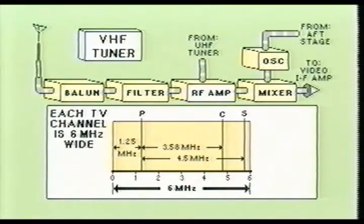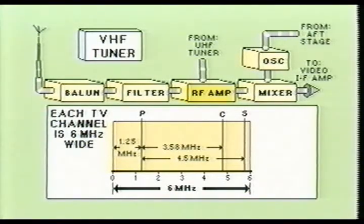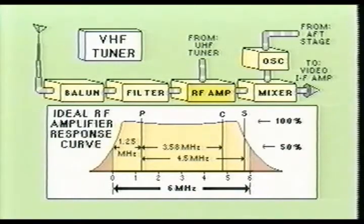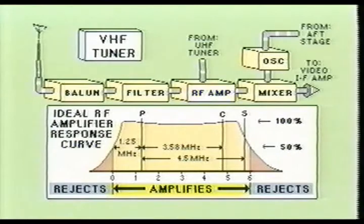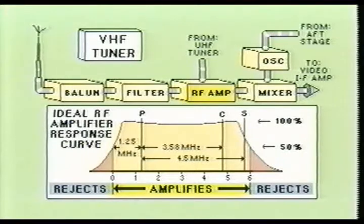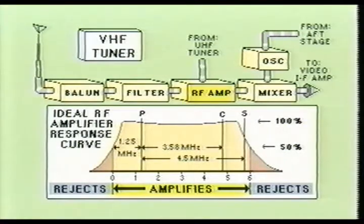Each television channel has a bandwidth of 6 MHz, with the video carrier close to the low frequency end and the sound carrier very close to the upper end of the channel bandwidth. Therefore, the RF amplifier must have a very broad frequency response to provide equal amplification to the entire 6 MHz bandwidth. Since the frequency response of the RF amplifier stage is so wide, the gain of the stage is somewhat reduced. The ideal frequency response will be a flat bandpass, allowing all frequencies within this bandpass to be amplified equally, while all frequencies falling outside the 6 MHz bandwidth will be completely rejected.